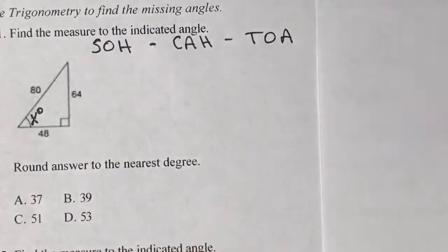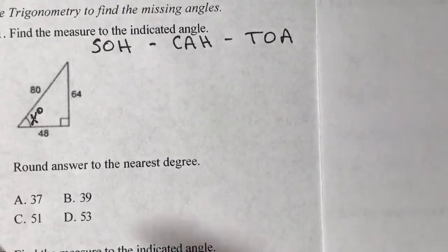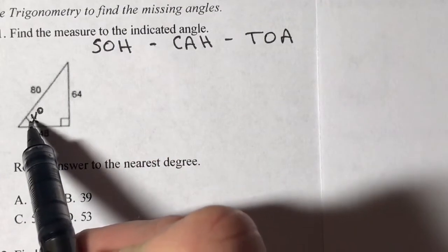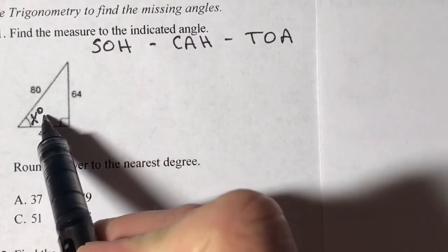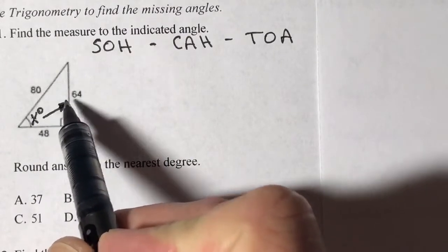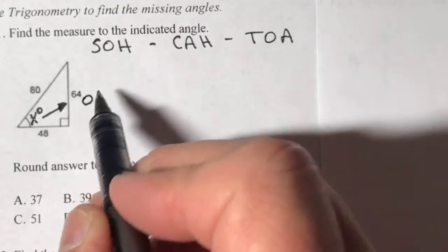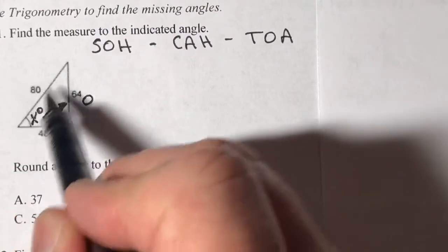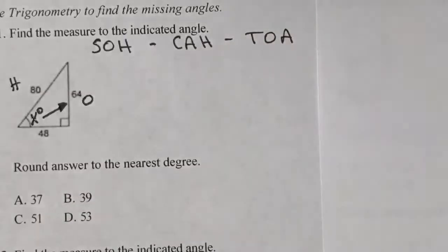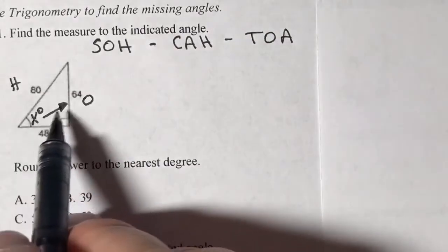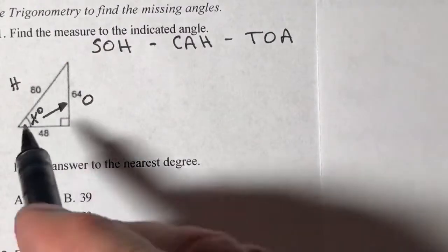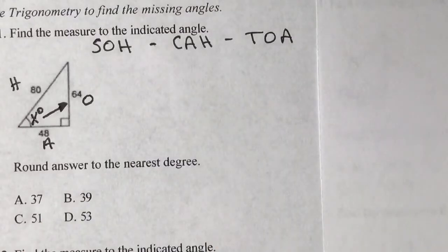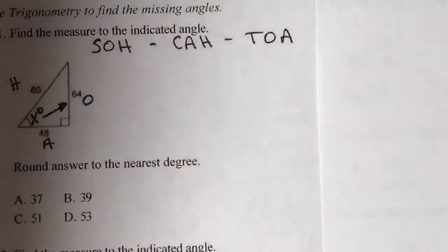We're going to use all three of these sides and set up each trig function. The referenced angle is key — when you have the referenced angle, the opposite side is identified. When you have the 90-degree angle, that side is your hypotenuse. Once you locate those two, there's no guesswork — the remaining side is your adjacent.